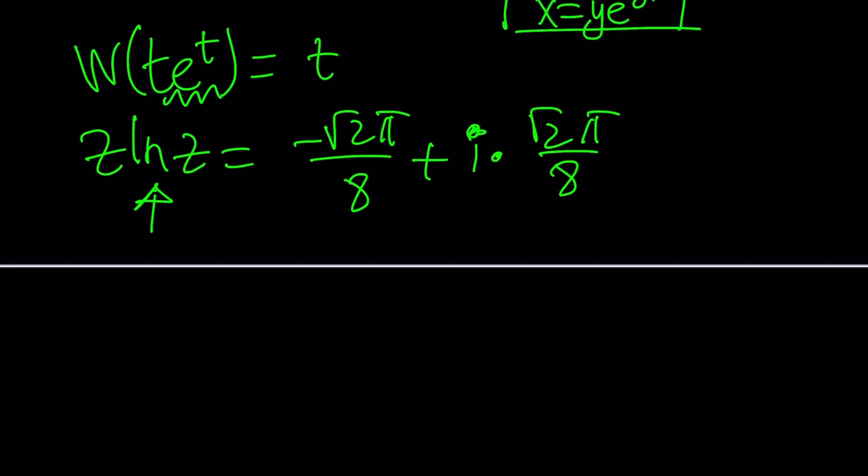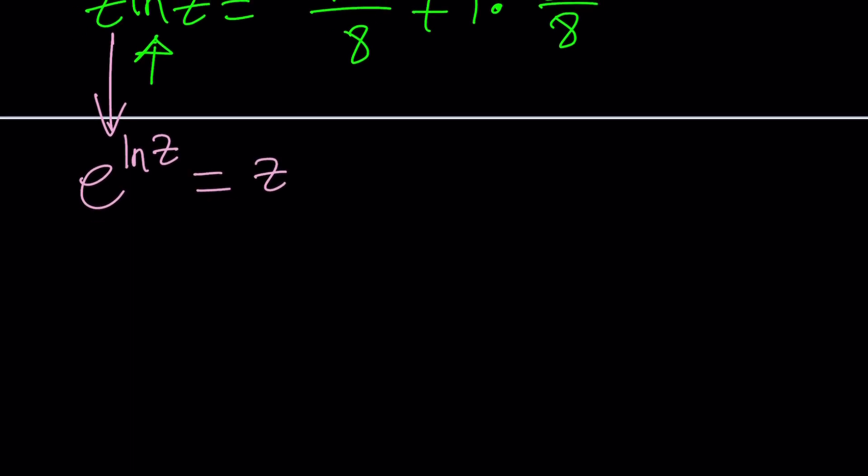Consider the following identity. z can be written as e to the power ln z. And guess what? That does the trick. So here's what we're going to do. We're going to replace z with e^(ln z). So our expression becomes ln z multiplied by e to the power ln z. Beautiful, right? And then on the right hand side we're going to have the same expression.